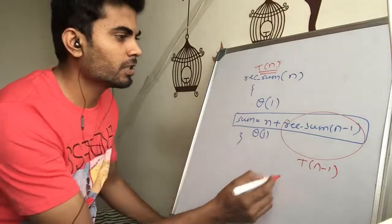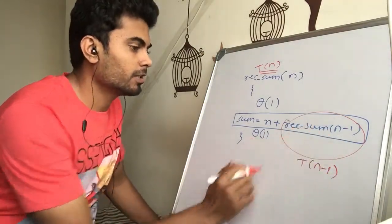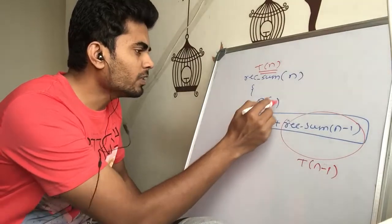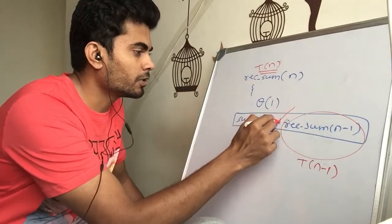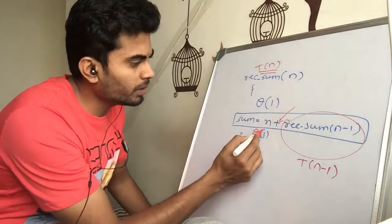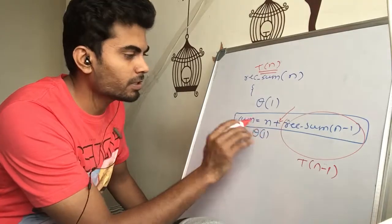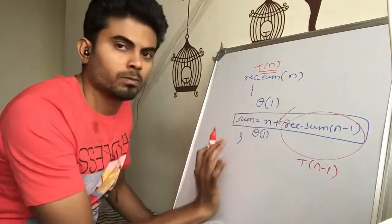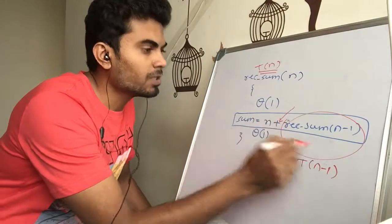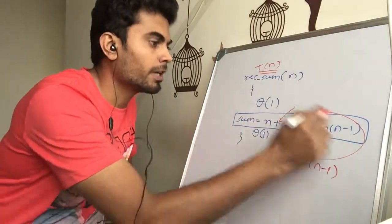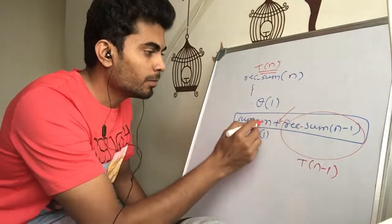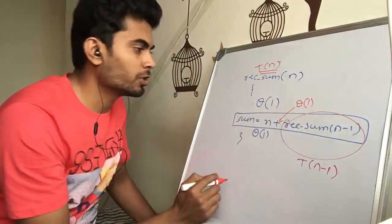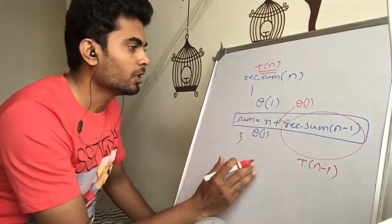We are just taking the constant as it is, the variable as it is, and this is the time complexity for this one. All these computations — this is one addition. Don't be confused by this n; this is just an addition. The addition of two numbers is constant, but this number is variable. It is varying with n, but the addition operation itself is again a θ(1) computation.